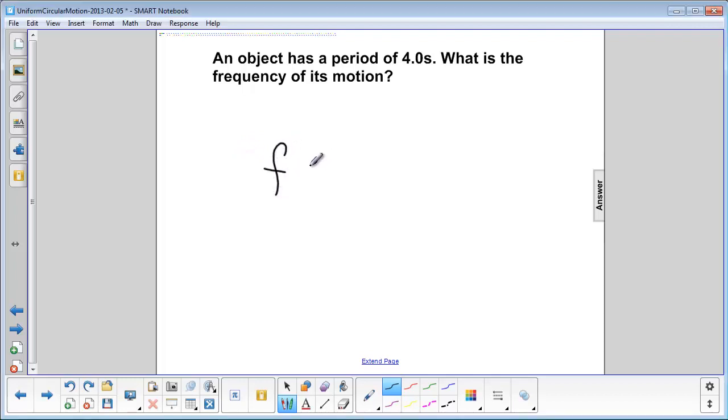So frequency is equal to 1 divided by period. That would be 1 divided by 4 seconds. Now technically you could leave this as a fraction, but it would be better to write it as 0.25 hertz.